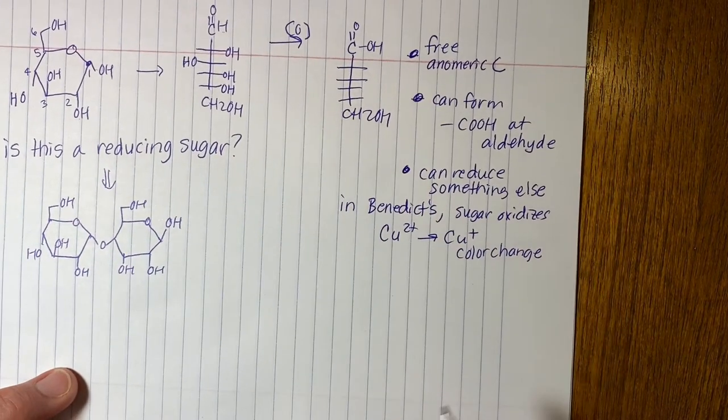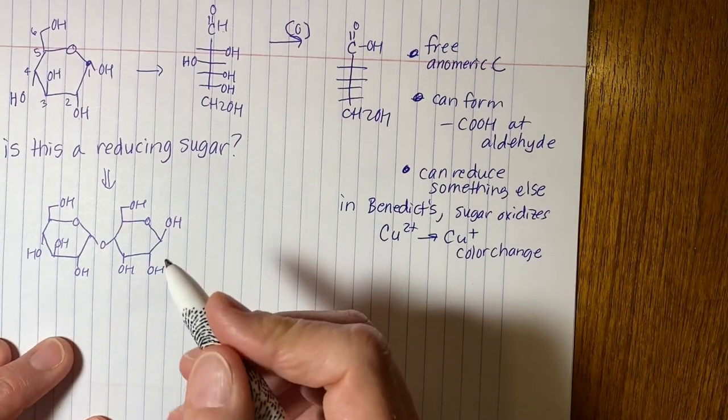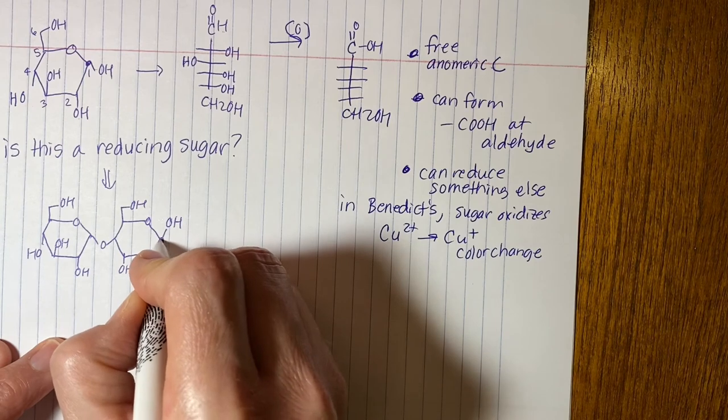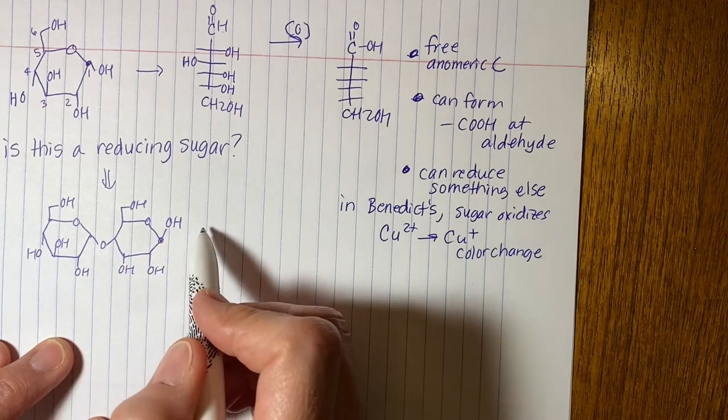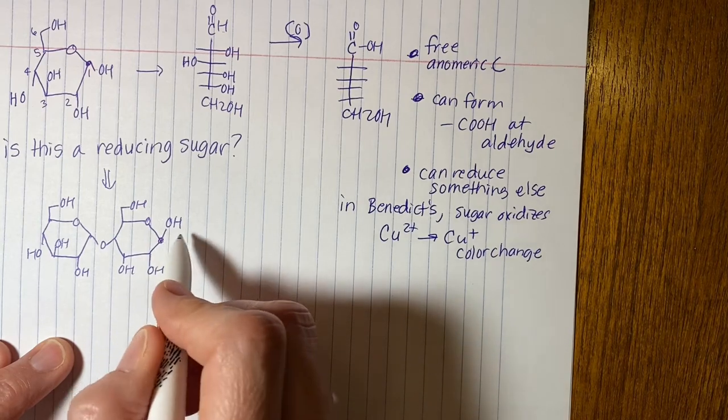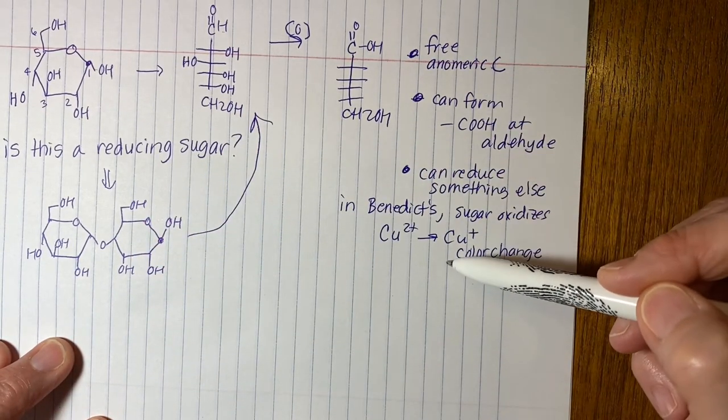So what are our criteria? We need a free anomeric carbon. So let's check that out first. Anomeric carbon in this case is here, carbon 1. That's not attached to anything. So it's a free anomeric carbon. So this ring could form the linear form as well. And then all these things would be true.